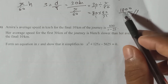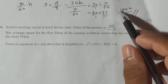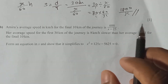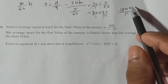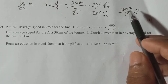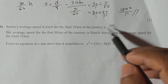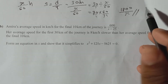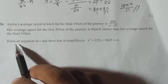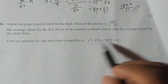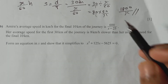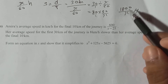Both values are speeds in km per hour, so don't worry about units. They tell us to form an equation, meaning we need to make something equal. To make these two speeds equal, since the first 30 km speed is 8 km/h less, we need to add 8 to the smaller speed to make them equal.